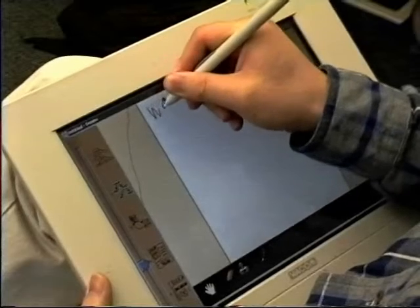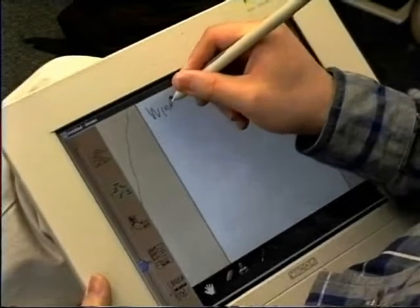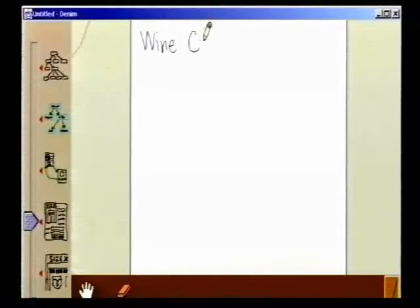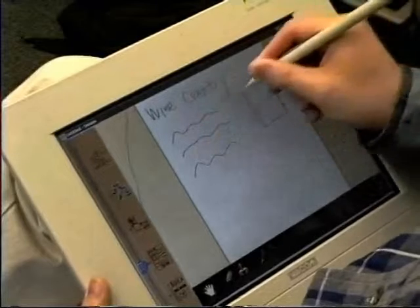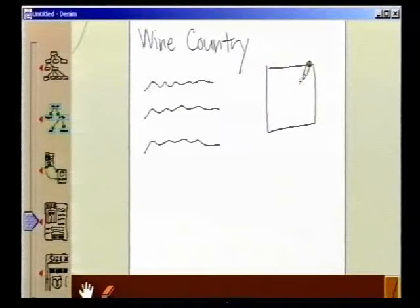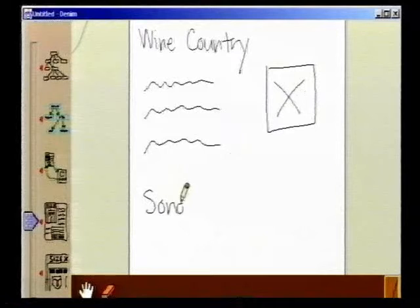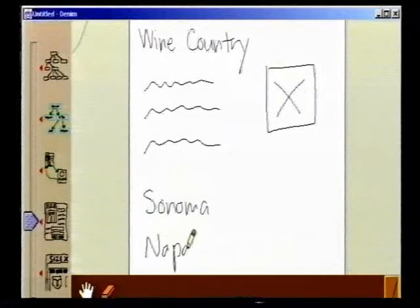Bob now sketches his designs inside the blank pages. He writes in the main header, some Greek text to represent content that has not yet been determined, and a placeholder for an image. Denim allows Bob to sketch whatever he likes without interference.